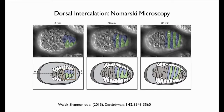Here's a snapshot from a 4D time-lapse Nomarski series, with some cells colorized in green and blue. Initially the cells are not particularly polarized, but they rapidly polarize, begin to directionally migrate, and by the end, as intercalation is over, you get a characteristic alternating pattern of intercalated cells.